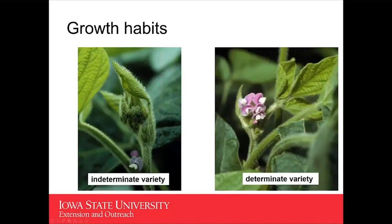Another key thing to consider as we're staging soybeans is that the soybeans we're growing in Iowa and most of the Midwest are indeterminate varieties. You have to get down into the southern U.S. soybean growing regions to find determinate varieties. Indeterminate simply means that we can have an overlap of our vegetative and our reproductive growth and development — unlike corn where we go from vegetative to reproductive growth sequentially. Pay attention to your herbicide labels because they'll give direction on whether you're looking at plant height, vegetative stage, or reproductive stage.